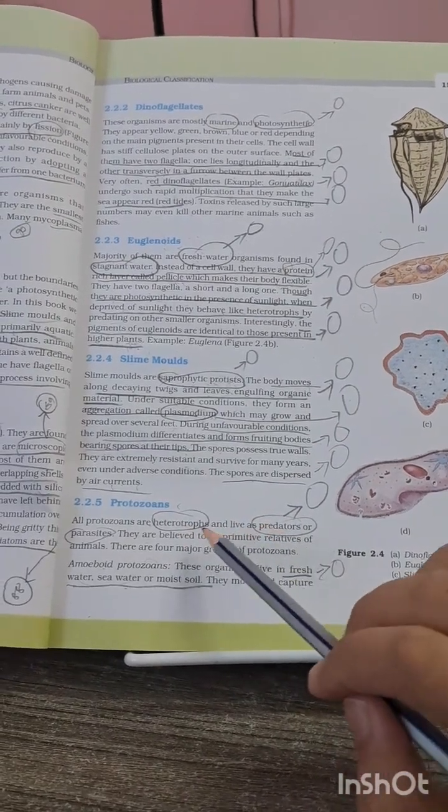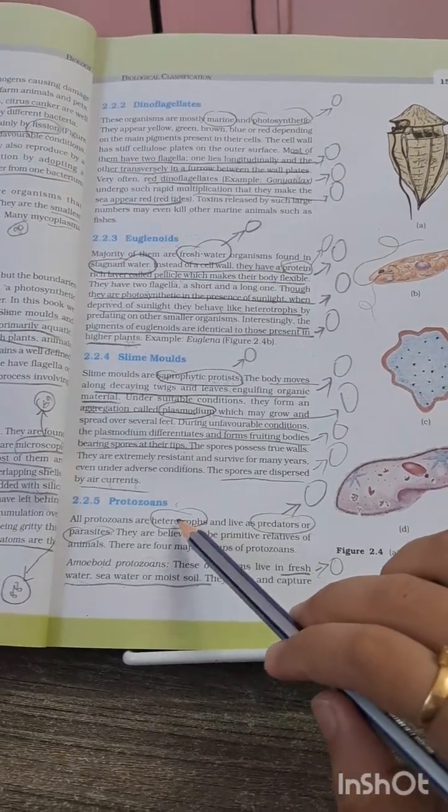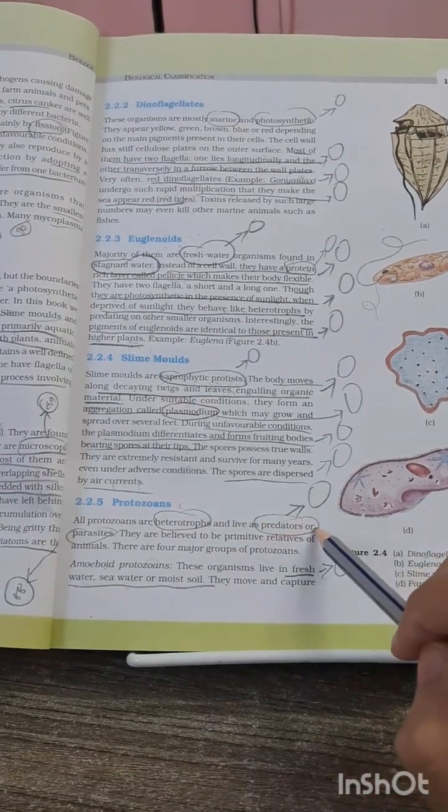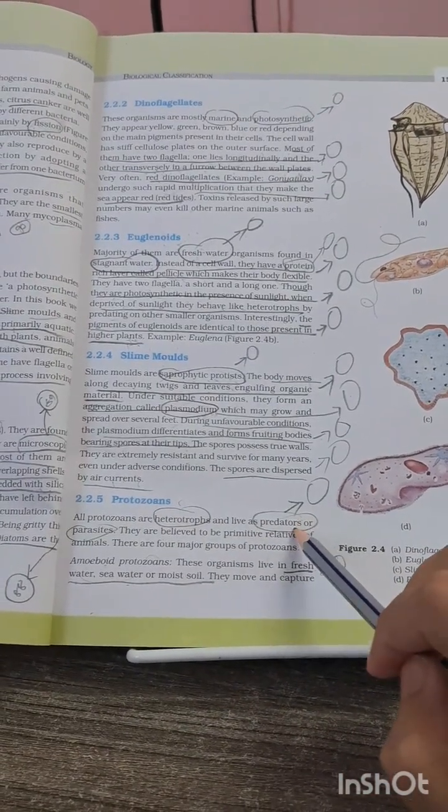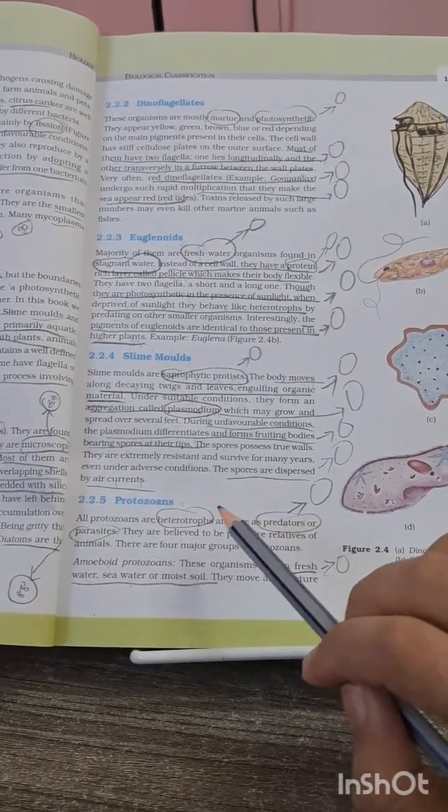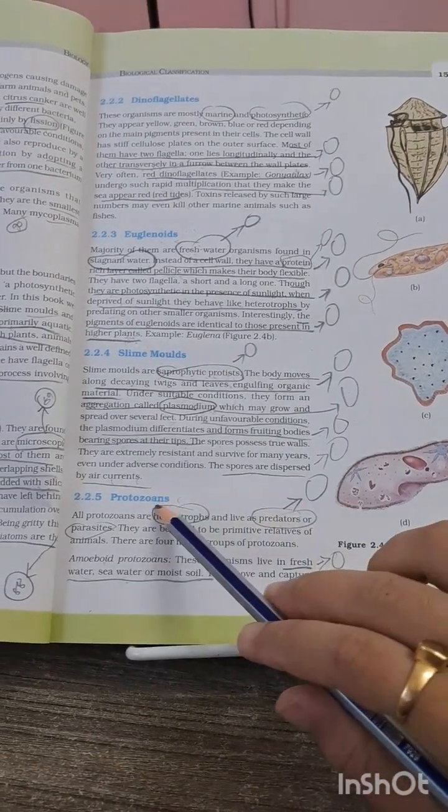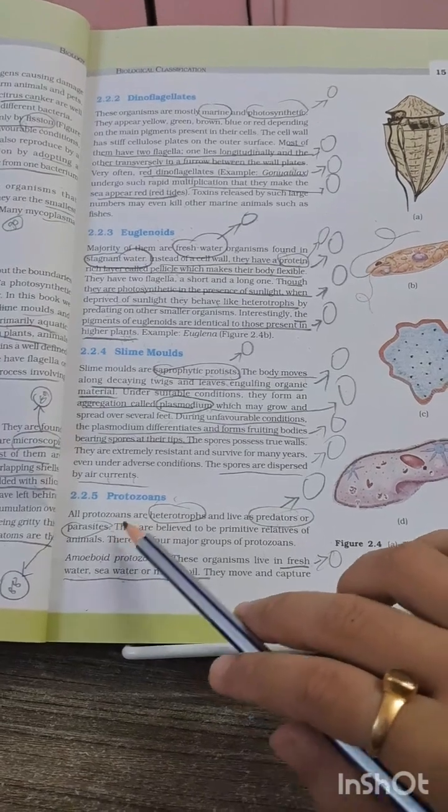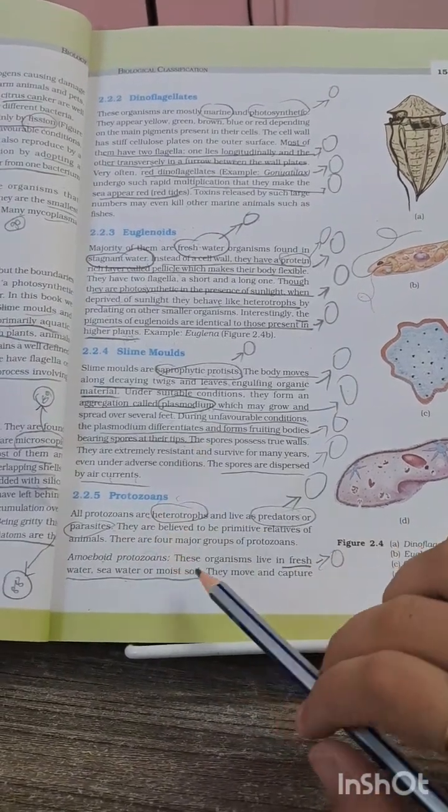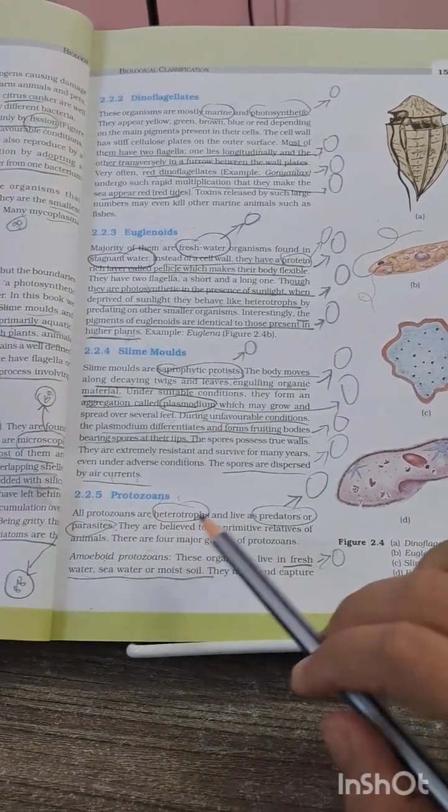This MCQ has been asked many times, that which in the kingdom Protista are predators. Protozoans are the predator parasites. Now coming to the major groups of protozoans, first group is amoeboid protozoan and they live in freshwater, seawater and moist soil. Other groups of protozoans will be discussed in our next video on page number 16.